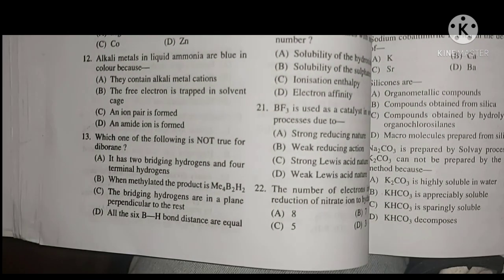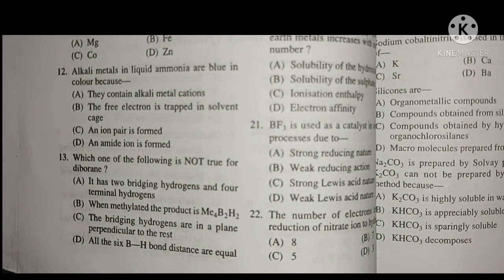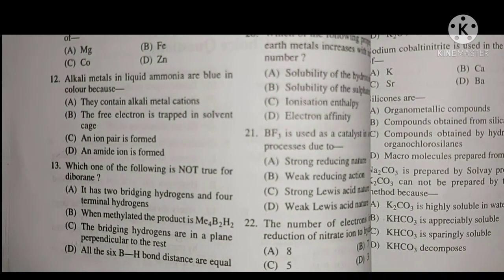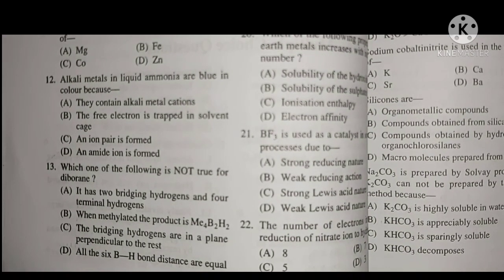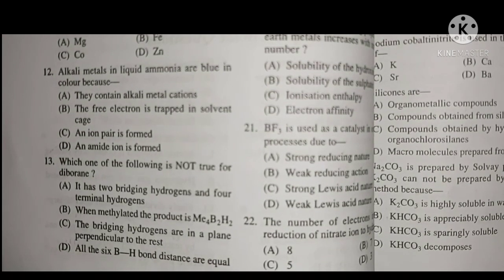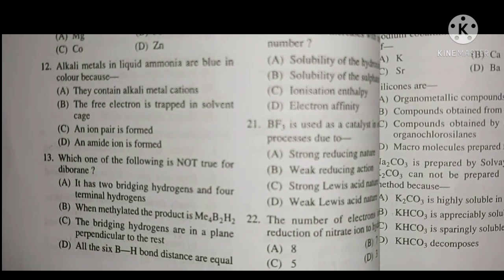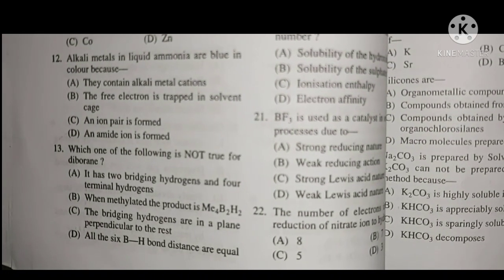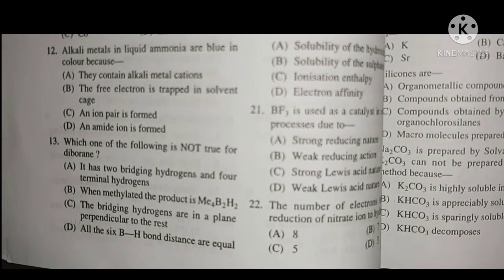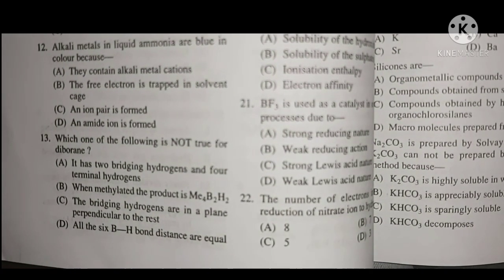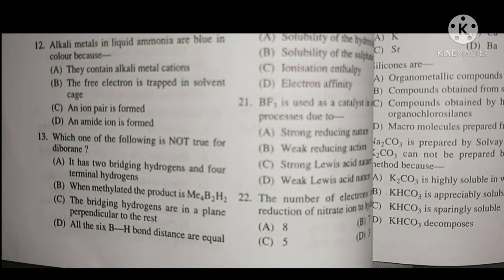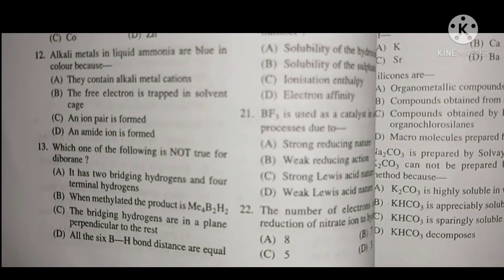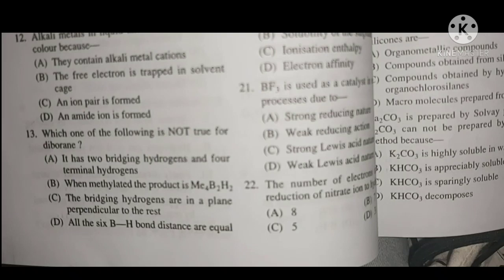Question 13: Which one of the following is not true for borane? It has two bridging hydrogens and four terminal hydrogens, which is correct. When methylated, the product replaces the bridging hydrogens with methyl groups. The bridging hydrogens are in a plane perpendicular. All six BH bond distances are equal is the wrong statement because bridging BH bonds are longer and terminal BH bonds are shorter. Option D.